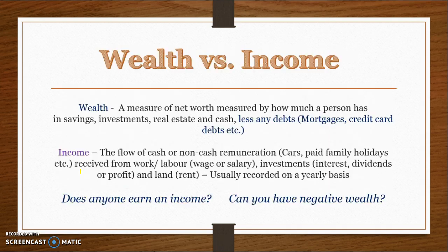When we're looking at wealth, we're looking at a measure of the net worth of somebody. It's basically a measure of how much a person has in savings, investments, real estate, and cash — all the assets they have at a particular point in time. Those investments may include superannuation as well, minus any debts they have at that point in time. That debt might be a mortgage, credit card debts, etc.